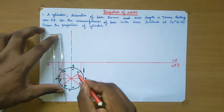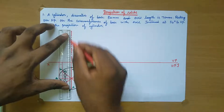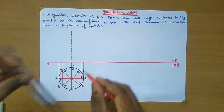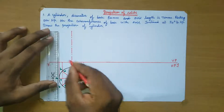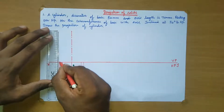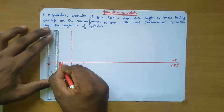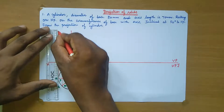We drop the axis length of 70 mm. We drop a rectangle image. For each projector, we need to draw 70 mm.